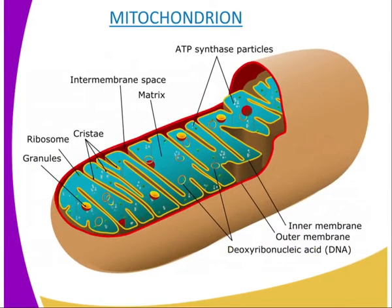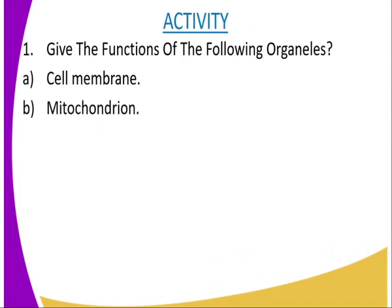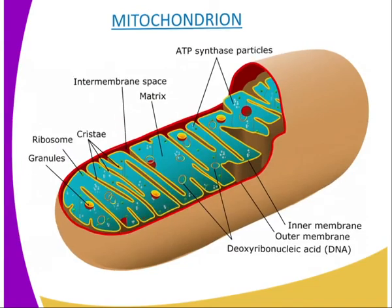Having said that, we have our second structure, and as I have said, this is called the mitochondrion — in singular — while in plural it is the mitochondria. The mitochondria has got different adaptations which we shall look at later. But at a glance, we are able to see that there is the inner membrane, which is highly folded into projections known as the cristae. We have the matrix, which is the fluid-filled cavity. We have the DNA, the granules, and the ATP synthesis particles. Those are the different organelles we have seen, and in our next lesson we shall identify the other organelles.